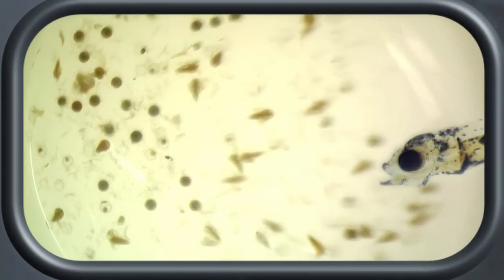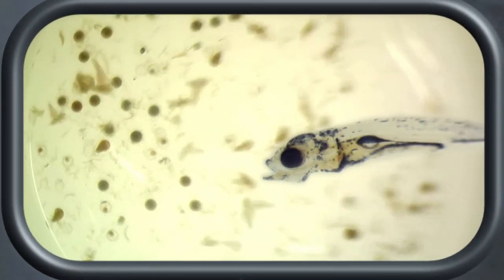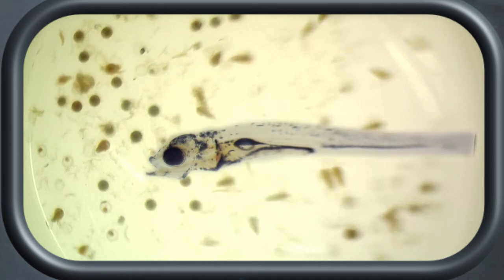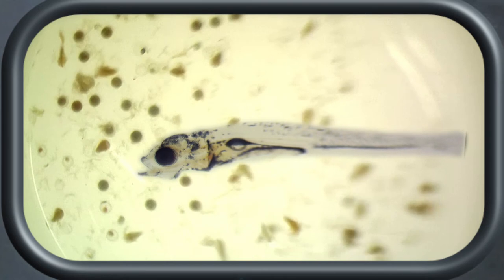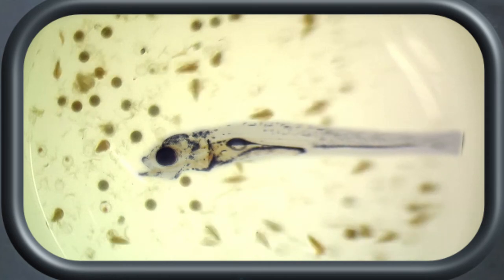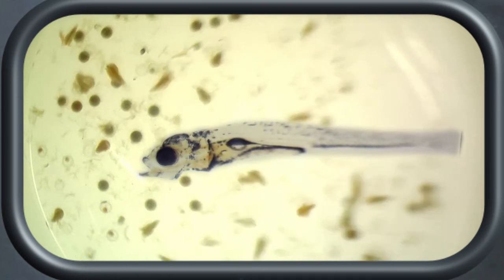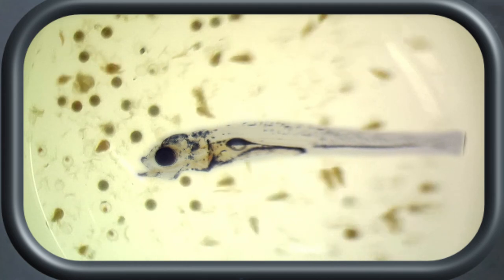The next challenge is getting the larval perch to eat. Yellow perch larvae initially have poor eyesight, but they respond to the movement of shrimp and begin eating. Live feed is added to the tanks for about 20 days. Over that time, they are introduced to small pelletized foods. The process is called feed training.